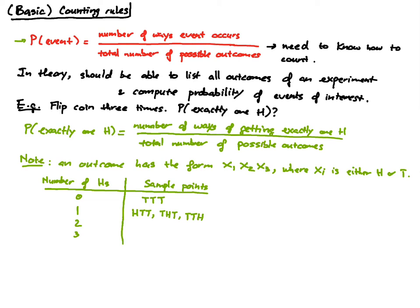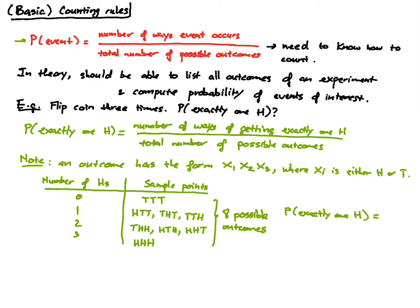When it comes to getting two heads, we can have: tail-head-head, head-tail-head, and head-head-tail. When it comes to three heads, there's only one way: head-head-head. According to this table, we have a total of eight possible outcomes. The probability of getting exactly one head is equal to the number of ways we get one head divided by the total number of outcomes.